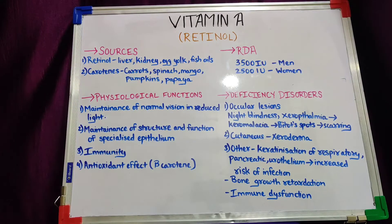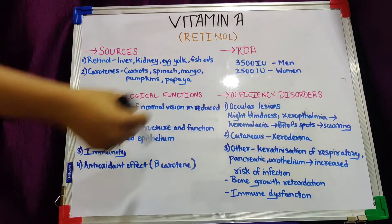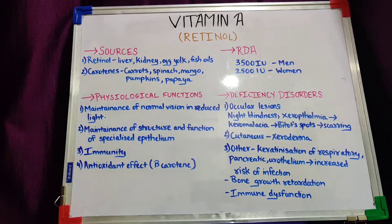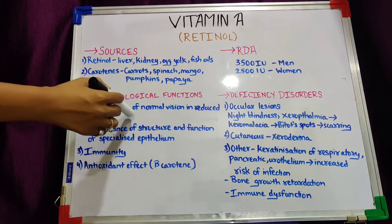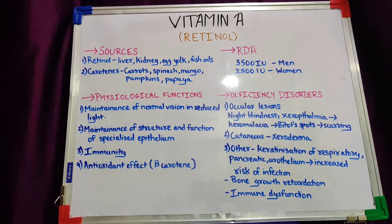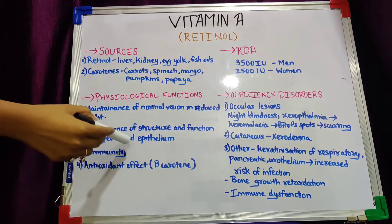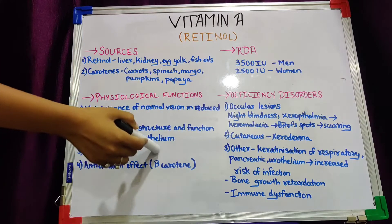Physiological functions refer to the functions that a specific vitamin performs in the body. The first and very important physiological function of vitamin A is maintenance of normal vision in reduced light. Vitamin A is important for functioning of the eye — specifically for seeing in dim light. In dim light, vitamin A synthesizes certain enzymes in our eyes through which we are able to see.